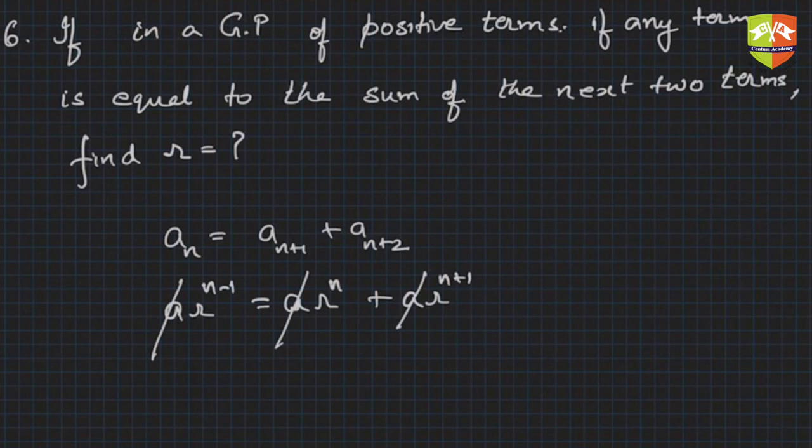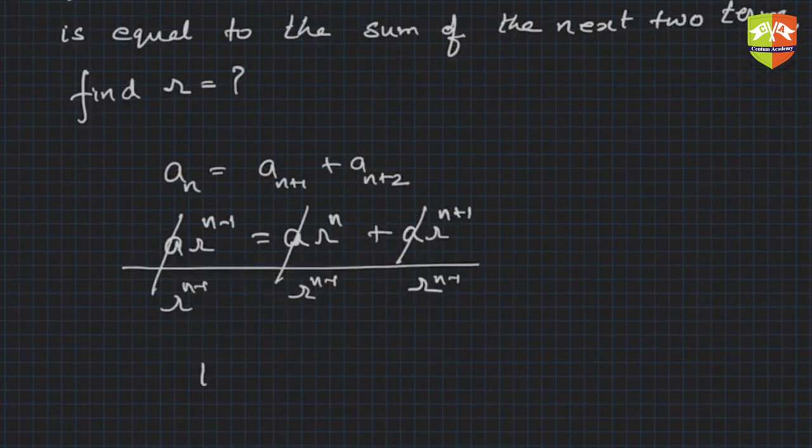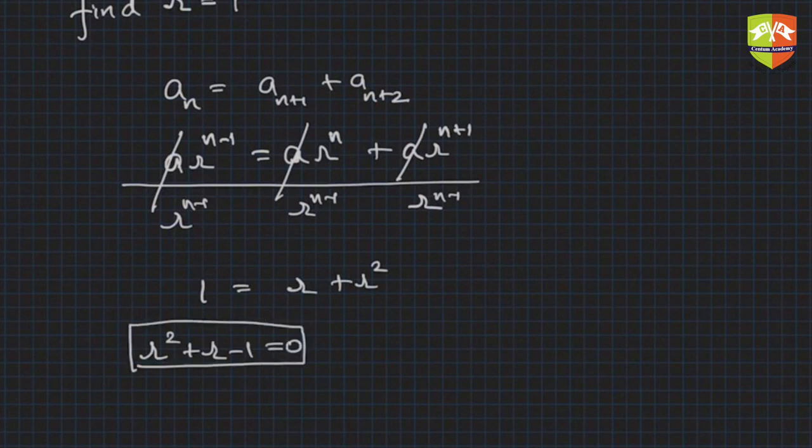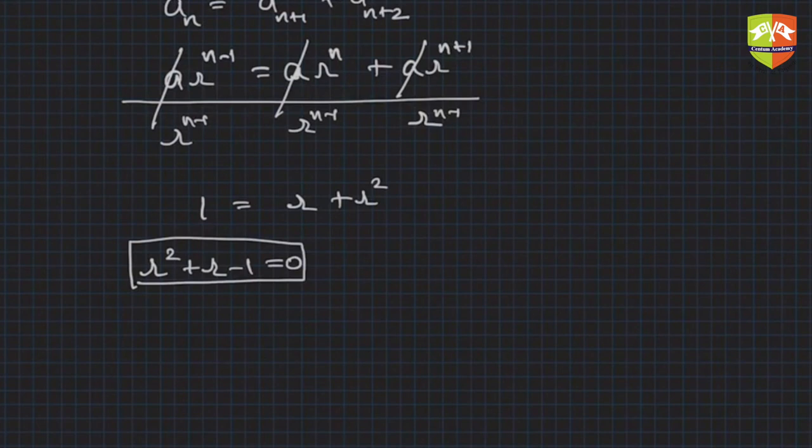This will give you what? 1 equals R plus R squared. So hence your quadratic equation is R squared plus R minus 1 equals 0. So hence R is minus b, I will not take minus because it's a positive GP, terms are all positive.